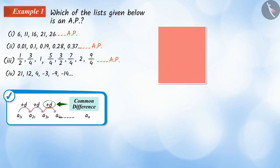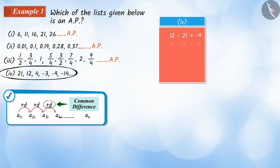On the other hand, because the difference between every two consecutive terms in the fourth list is not the same, hence it is not an AP.